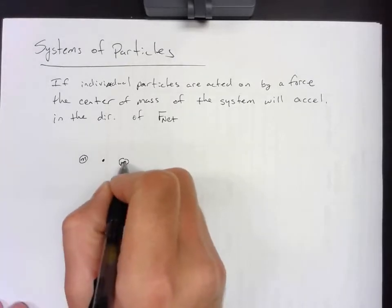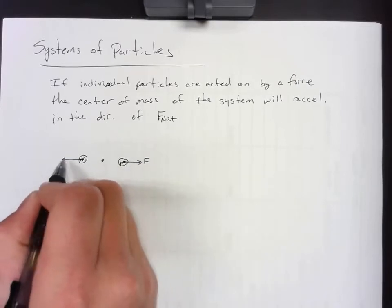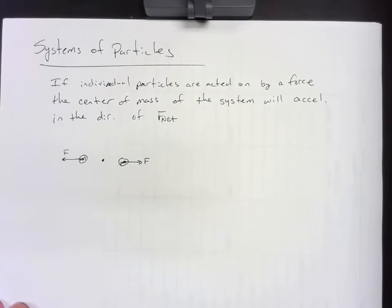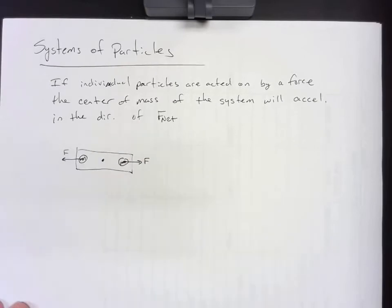Well, if we exert a force F on this object and then an equal and opposite force F on that object, the net force in that entire system is zero. So there should be zero acceleration of the center of mass.